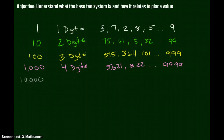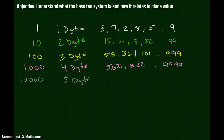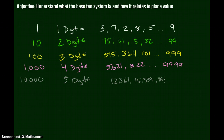So if 9,999 is our last four-digit number, one more after that is 10,000. 10,000 is our smallest five-digit number. There are a lot of five-digit numbers — for example, 12,361, 15,339, and 85,412 are all five-digit numbers.